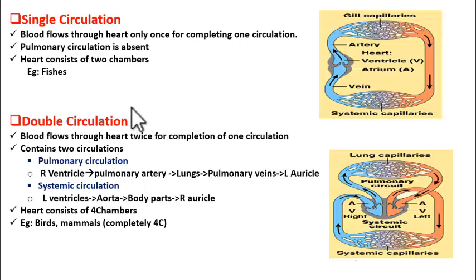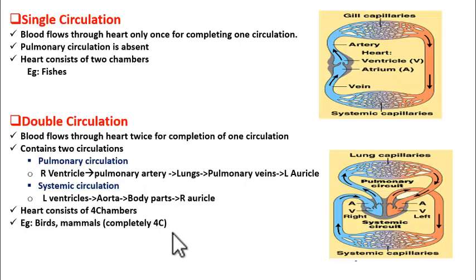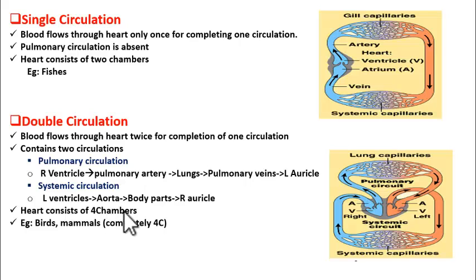Where do you find this circulation happening? It is seen in birds and mammals, where there is a completely divided four-chambered heart. In organisms which have four chambers in the heart, we find double circulation.